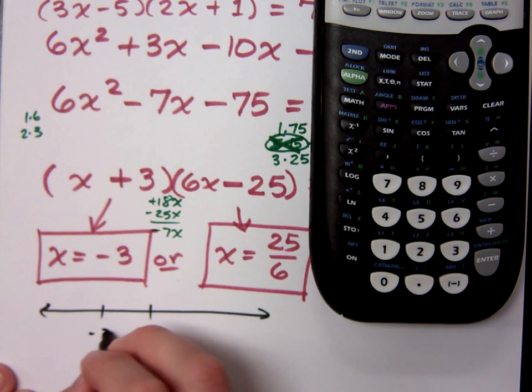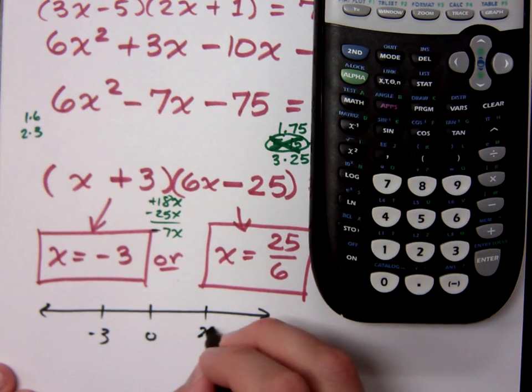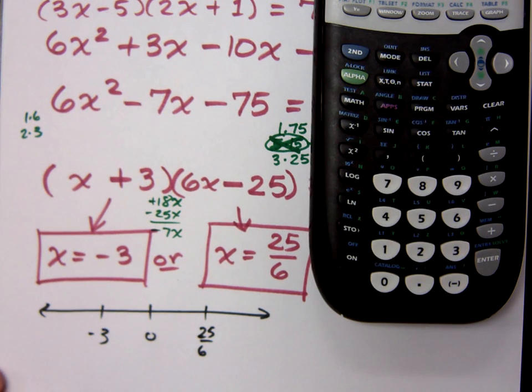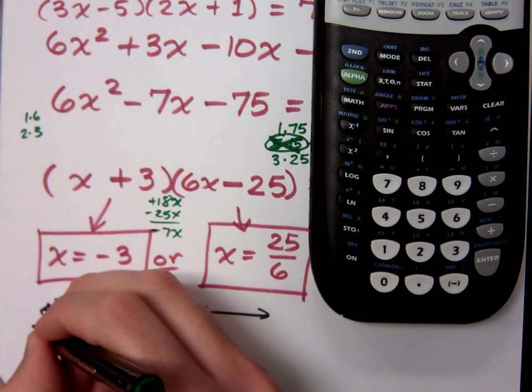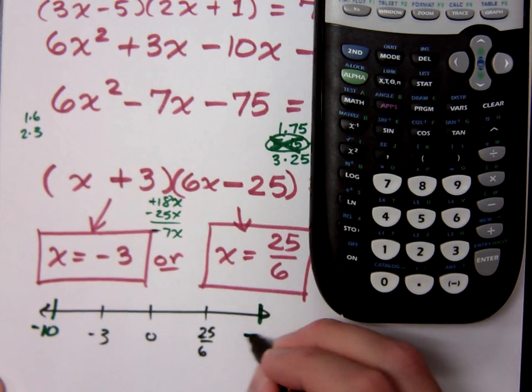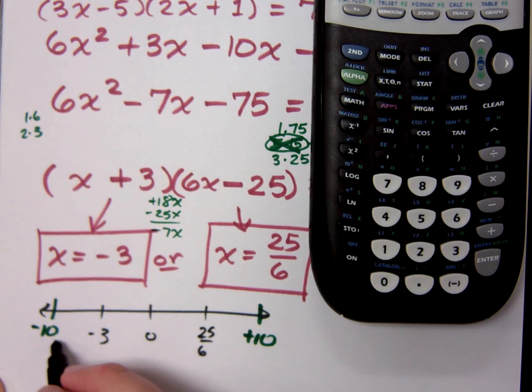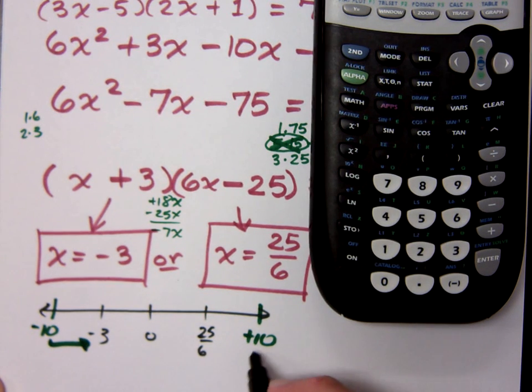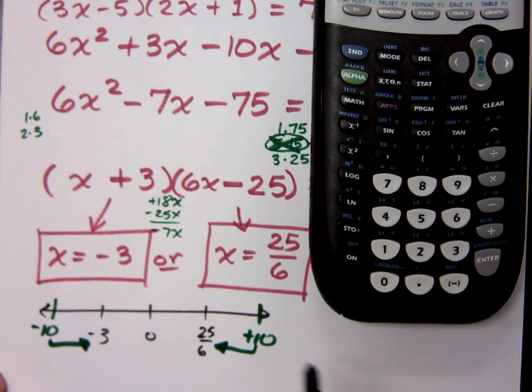0 is closer to negative 3 than it is 25 over 6. So if I will check what's closest to negative 10, what's closest to positive 10. The first one this guy finds is negative 3. The first one that finds is 25 over 6. Now, is that always going to work? No. But for a lot of the problems that we encounter, that's going to work out very nicely for us.